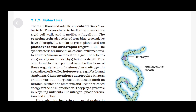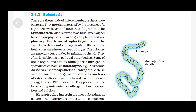Eubacteria: there are thousands of different eubacteria or true bacteria. They are characterised by the presence of a rigid cell wall and, if motile, a flagellum. The cyanobacteria, also referred to as blue-green algae, have chlorophyll A similar to green plants and are photosynthetic autotrophs. The cyanobacteria are unicellular, colonial or filamentous, freshwater or marine or terrestrial algae. The colonies are generally surrounded by a gelatinous sheath. They often form blooms in polluted water bodies. Some of these organisms can fix atmospheric nitrogen in specialised cells called heterocysts, e.g., Nostoc and Anabaena.